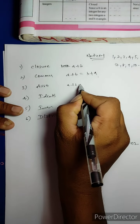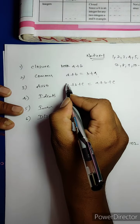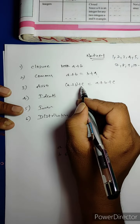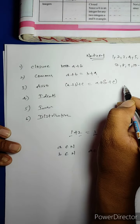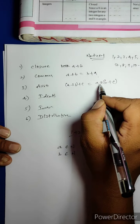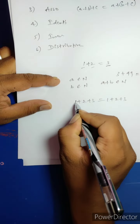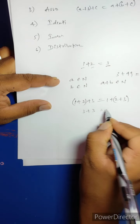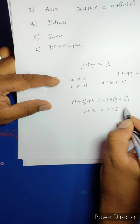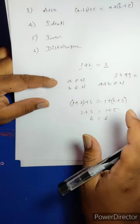Next: Associative property. For three numbers A + B + C: first you add two numbers then add the third number, or you add the last two numbers then add the first number — you get the same answer. For example: (1 + 2) + 3 = 3 + 3 = 6, and 1 + (2 + 3) = 1 + 5 = 6. However you add them, you get the same answer.